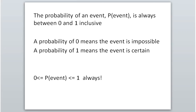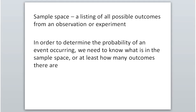The closer the probability is to 0, the less likely the event is; the closer to 1, the more likely. If the probability is 0.5, there's a 50/50 chance it'll happen. If it's 0.75, there's a good chance it will happen — you can tell how likely something is based on how close the number is to 0 or 1.